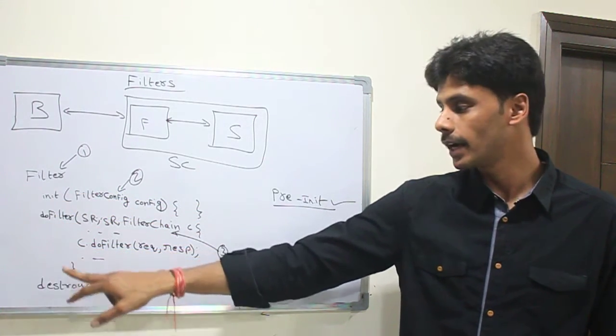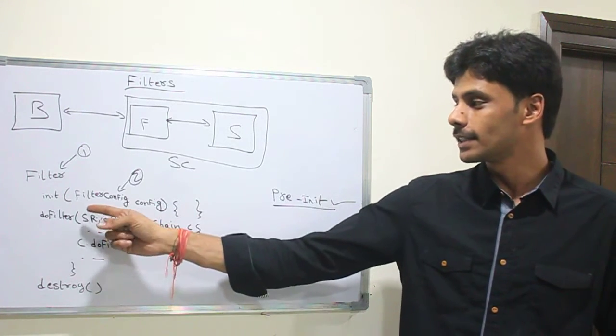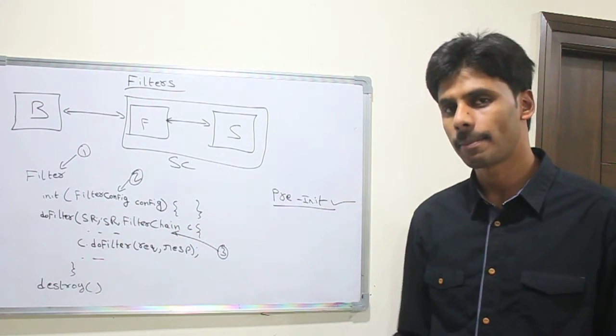Init, doFilter and destroy. Very similar to the servlets lifecycle. The only thing that changes is instead of servlet config, you can pass a filter config. That's another interface in the filter API.